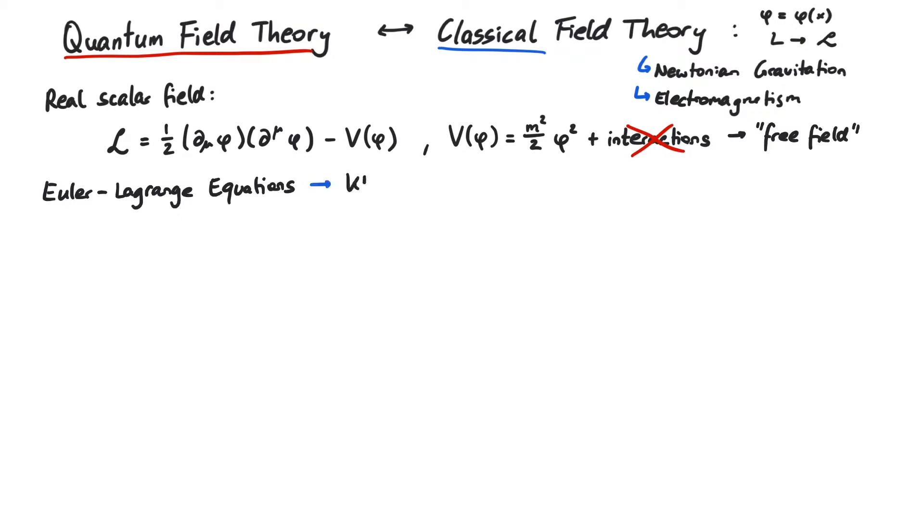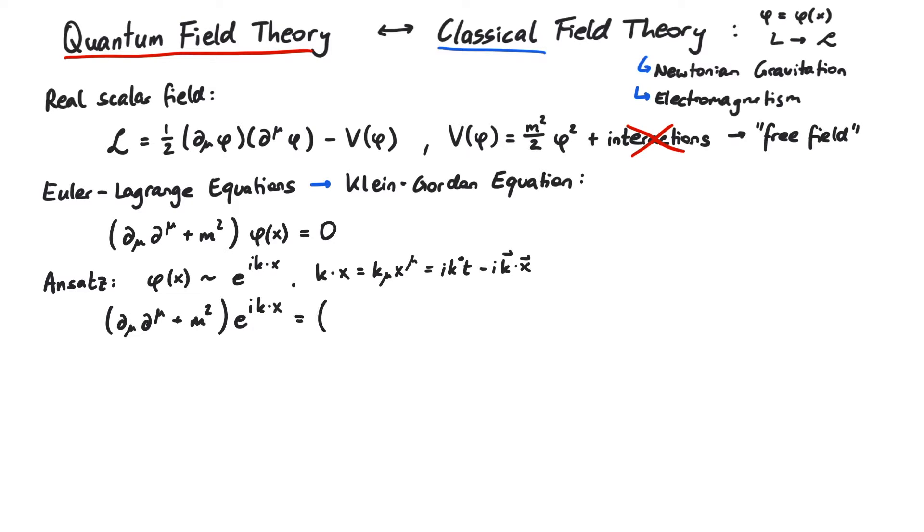Applying the Euler-Lagrange equations gives us the Klein-Gordon equation. In order to solve this equation, we use a simple exponential ansatz, e to the i k x, which is actually i omega t minus i k x. Plugging this into the Klein-Gordon equation gives i k mu i k mu plus m squared e to the i k x equals zero. For this equation to be valid for all x, the bracket must vanish.